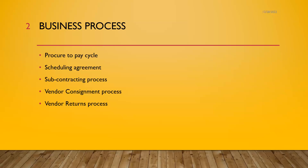Vendor consignment is another business process — the vendor puts the material in the company's premises, and when we consume it, it will be billed by the vendor, or else it will be taken back by the vendor. That is the consignment process. Vendor returns is also a business process — returning material back to the vendor. All of these — procure to pay, scheduling agreement, subcontracting, vendor consignment, and vendor returns — can be configured in the SAP system.